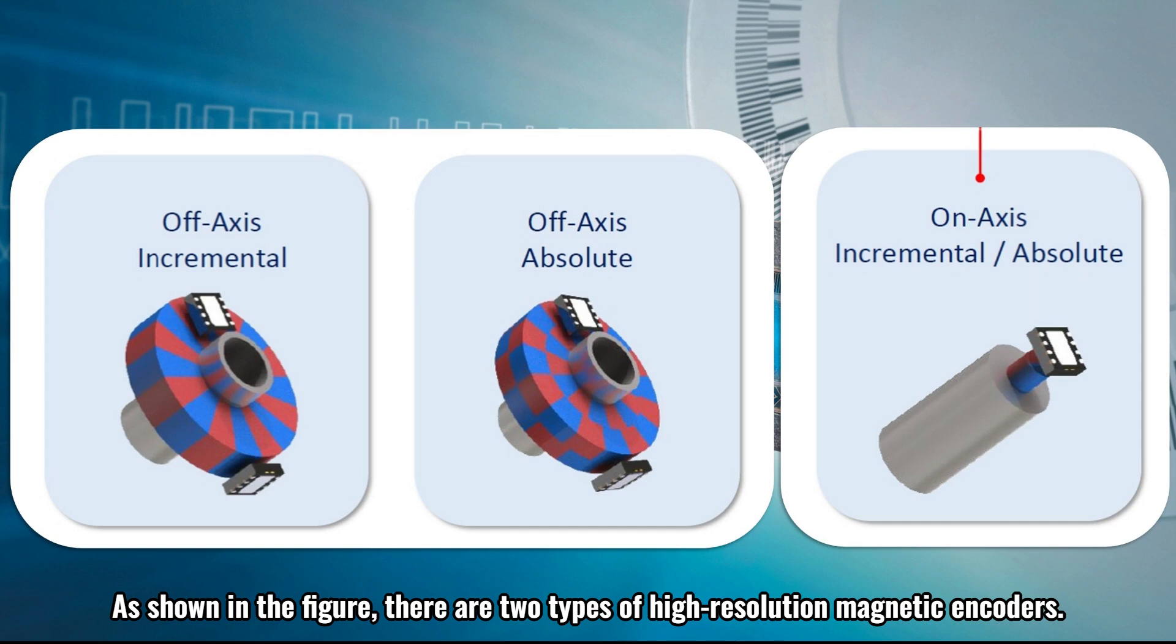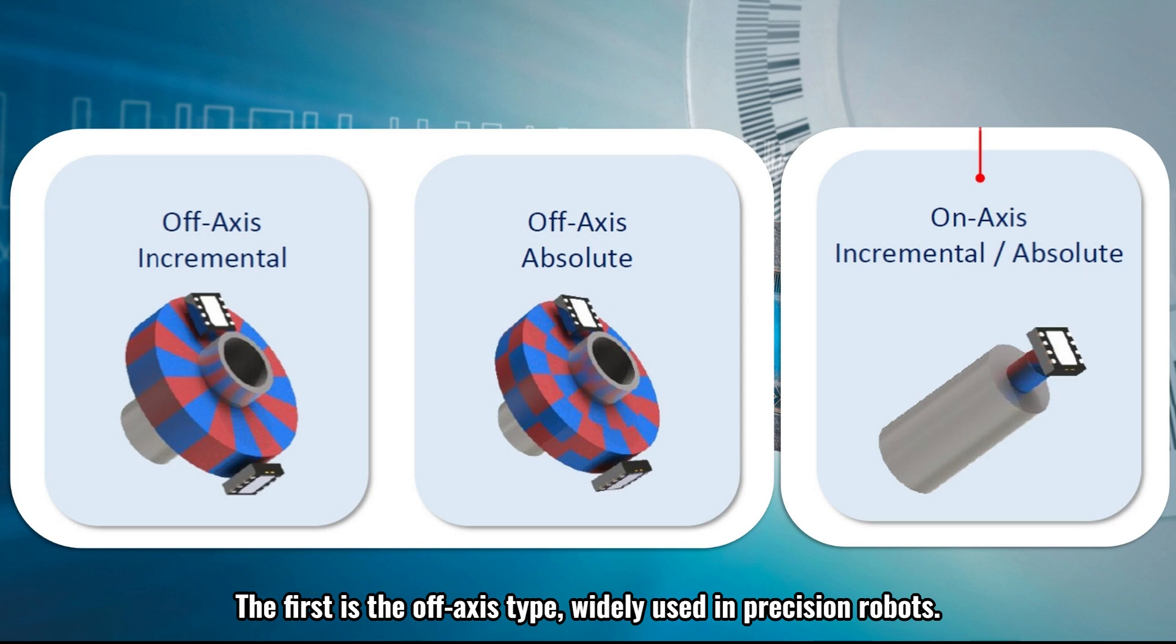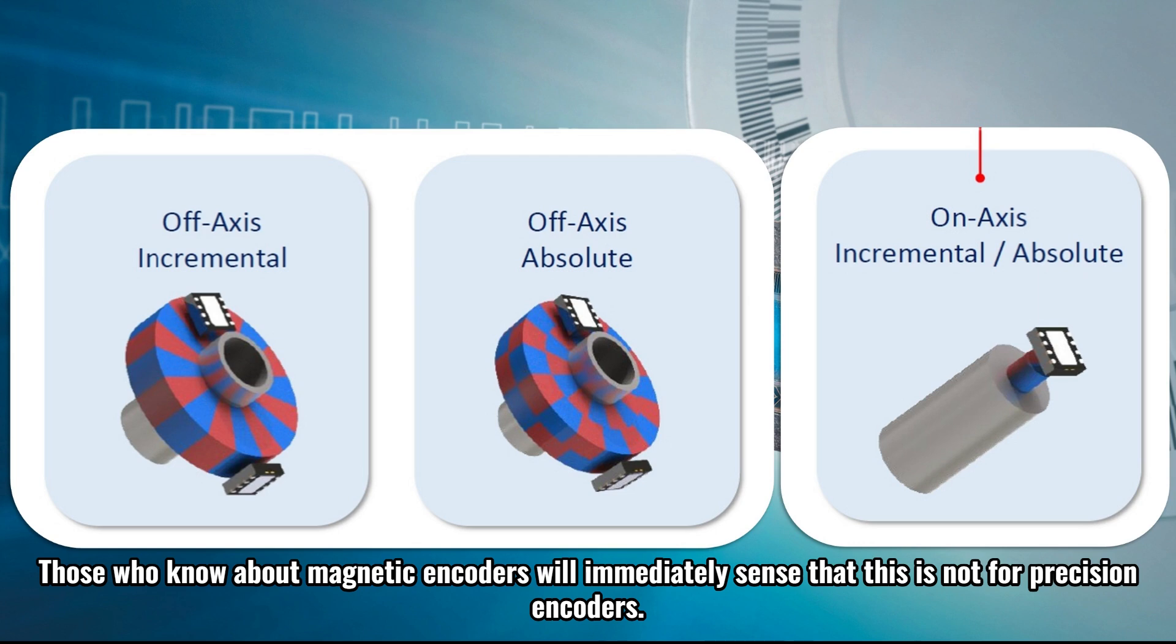As shown in the figure, there are two types of high-resolution magnetic encoders. The first is the off-axis type, widely used in precision robots. The second is the on-axis type, a widely used magnetic encoder type. Those who know about magnetic encoders will immediately sense that this is not for precision encoders.